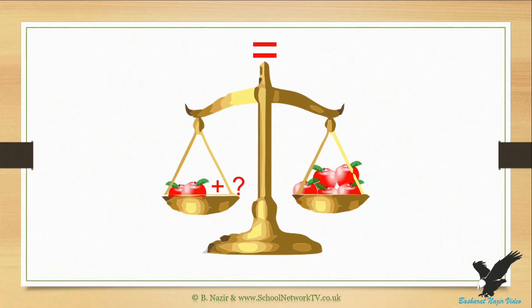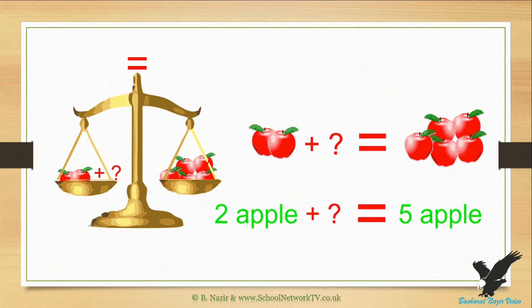We will use weighing scales to understand the idea of balancing. The next diagram shows this. You can see two plates of a scale. The scale shown is balanced or level, but the left side has two apples and the right has five apples. This means we need to add three more apples to the left side to make it balance. So the question mark can be replaced by three apples.